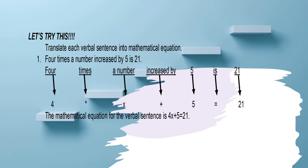So if we're going to write it as a mathematical equation: the word 'four' means the number 4; 'times' means multiplication; 'a number' — let's call it x; 'increased by' means addition, so plus 5; and 'is' stands for equals, giving us 21. Therefore, the mathematical equation for this verbal sentence is 4x plus 5 equals 21.